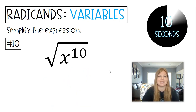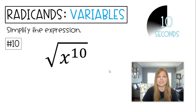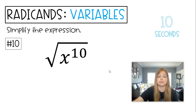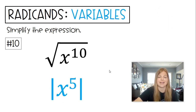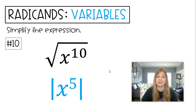Last one — square root of x to the tenth. The even exponent ones are always so nice, but watch out for that special rule. The answer is x to the fifth, and because I went from even to odd, I get those absolute value bars. I hope this video was helpful for you. Thank you so much for watching — watch it again, see what you can learn, see what you remember how to do, and hopefully it helps you. Thank you, bye!